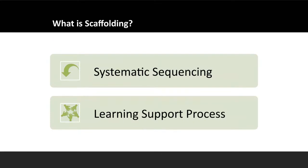Let's discuss what scaffolding is. The social context of learning influences important skills like constructive meaning making and self-regulation of learning. Through the process of scaffolding, we can help students develop the skills to become self-regulated learners. Scaffolding is a systematic sequencing of prompted content, materials, tasks, and instructor and peer support to optimize learning. It's also a process through which students are given support until they can apply new skills and strategies independently. The idea behind scaffolding is that eventually we want to remove those scaffolds so that students can do things on their own.